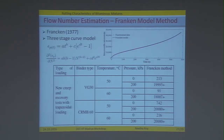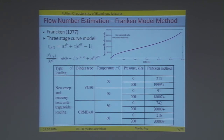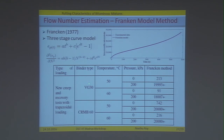Looking for another method, the Prankton model was found to capture the three-stage creep response. This model was used to capture the response across all three stages and was able to distinguish between a primary-only curve, a primary and secondary curve, or a primary, secondary, and tertiary curve together. These are some of the results obtained for the VG30 and CRMB mix.